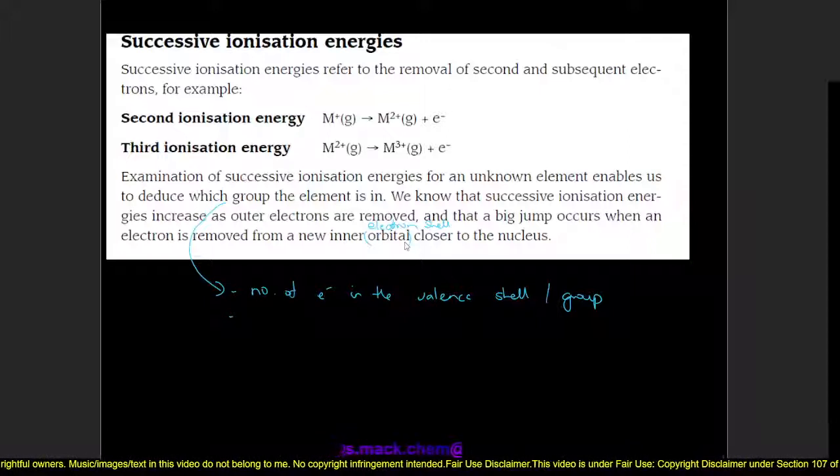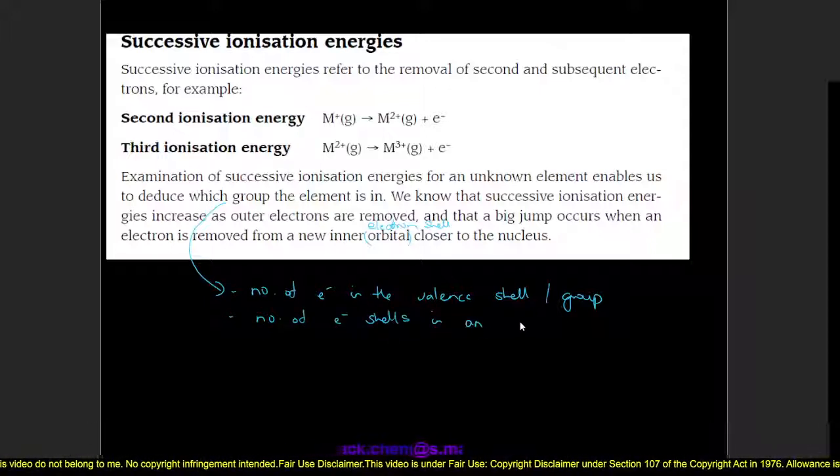So successive ionization energies can also tell us the number of electron shells in an atom.